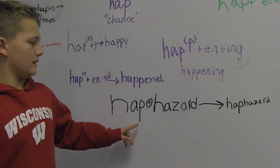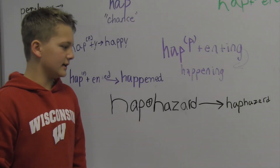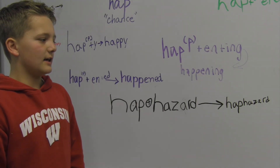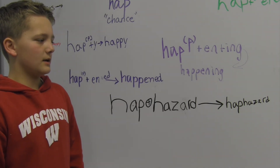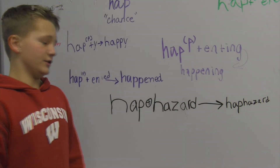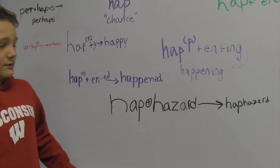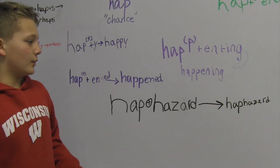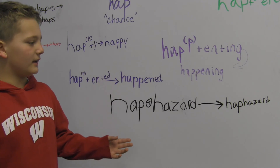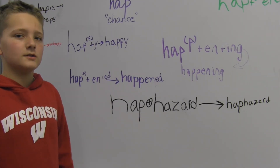H-A-P plus H-A-Z-A-R-D is rewritten as H-A-P-H-A-Z-A-R-D, haphazard. We don't double the P because we're not actually adding a suffix — we're actually adding another base. H-A-Z-A-R-D is a base.